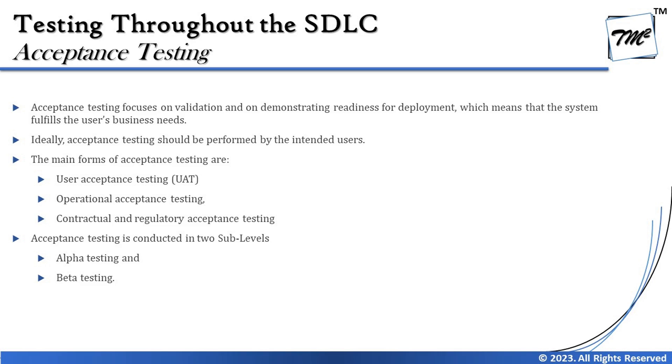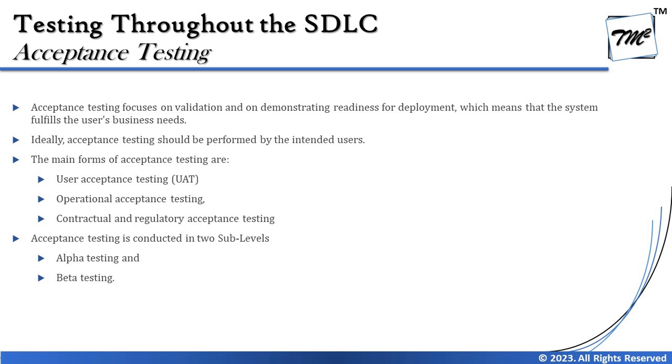Acceptance testing focuses on validation and demonstrating readiness for deployment, meaning the system fulfills the user's business needs. Ideally, acceptance testing should be performed by the intended users, but it's not strictly necessary that it be done entirely by real users. Initially it will be conducted by the owners of the product — the customer — and later, real users may also be involved if required.